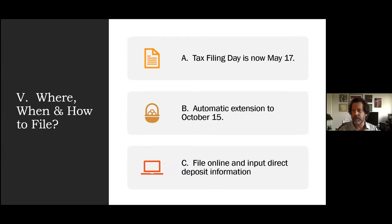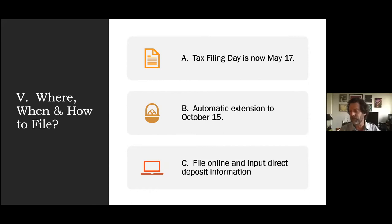Tax filing day is May 17th. If you can't get everything together, you can apply for an automatic extension to October 15th—no reason required. File online and input direct deposit information. If you're getting money back, you can receive it in three weeks or less with direct deposit. If you wait for a paper check, the IRS says it could be 12 to 20 weeks. If you move and your mail isn't forwarded, the check expires after six months and you'll have to call the IRS to get it reissued.